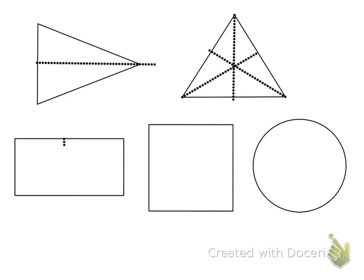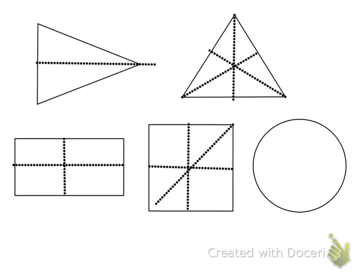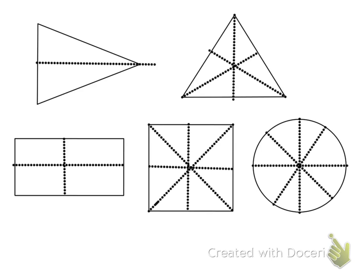A rectangle has two lines of symmetry — vertical and horizontal. A square has four lines of symmetry that I can fold it on. And a circle has infinite lines of symmetry, because I can fold a circle any way and it'll look the same on one side as it does on the other.